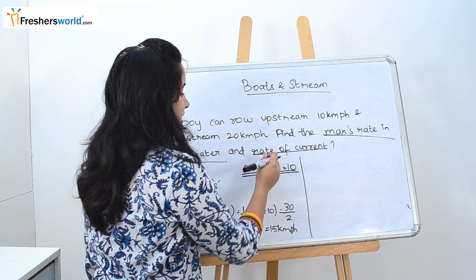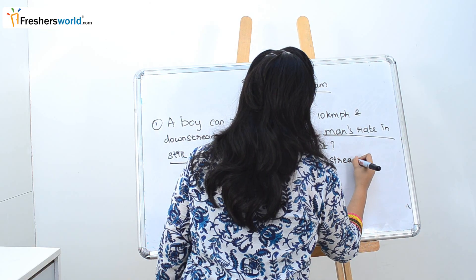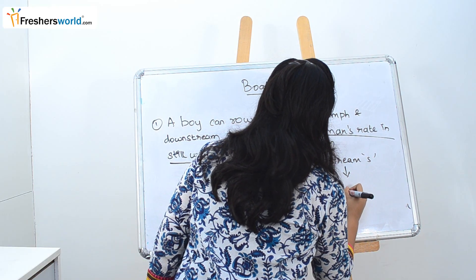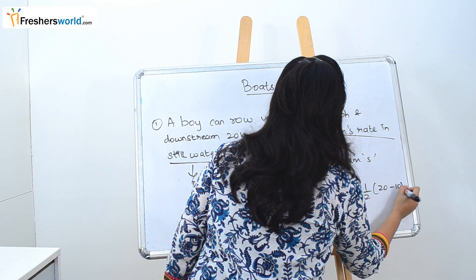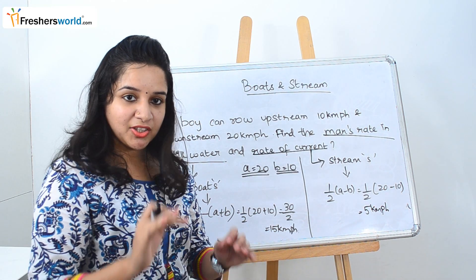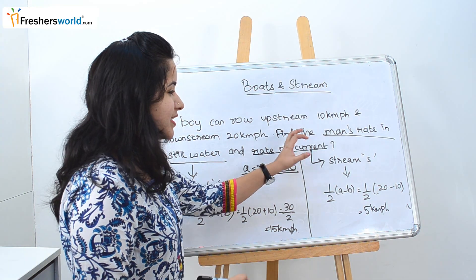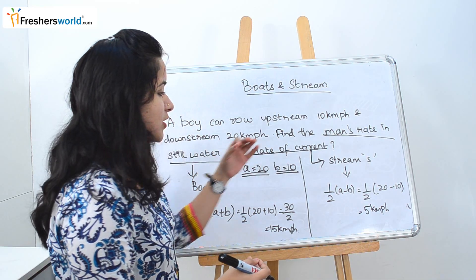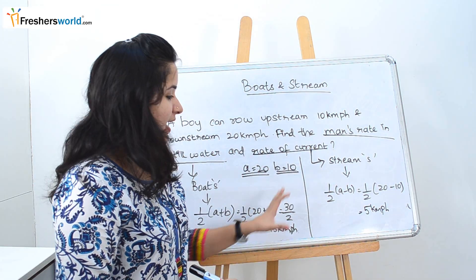The next part of the question asks for the rate of the current, which is nothing but stream speed. We know the formula: half of (A minus B), which equals half of (20 minus 10), which equals 5 kilometers per hour. They actually asked for boat speed and stream speed but in a different way — read the question carefully and you will find it out. We know the formula, so we directly substitute and find the answer.